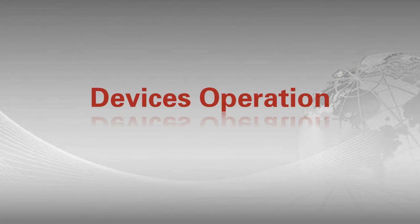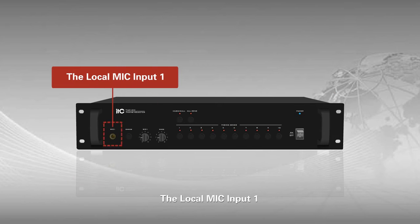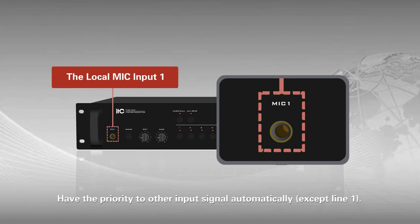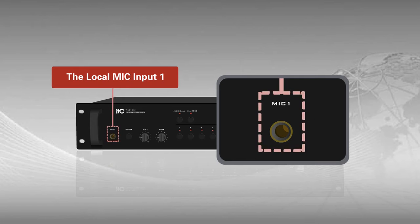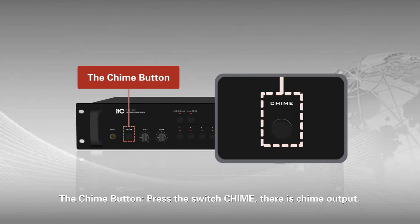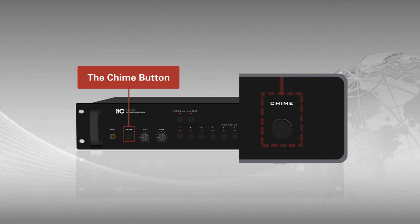Devices Operation. The local mic input 1 has priority over other input signals automatically, except 9-1. The trim button — press the switch trim — there is a trim output. The small knob at the rear is to adjust the volume.